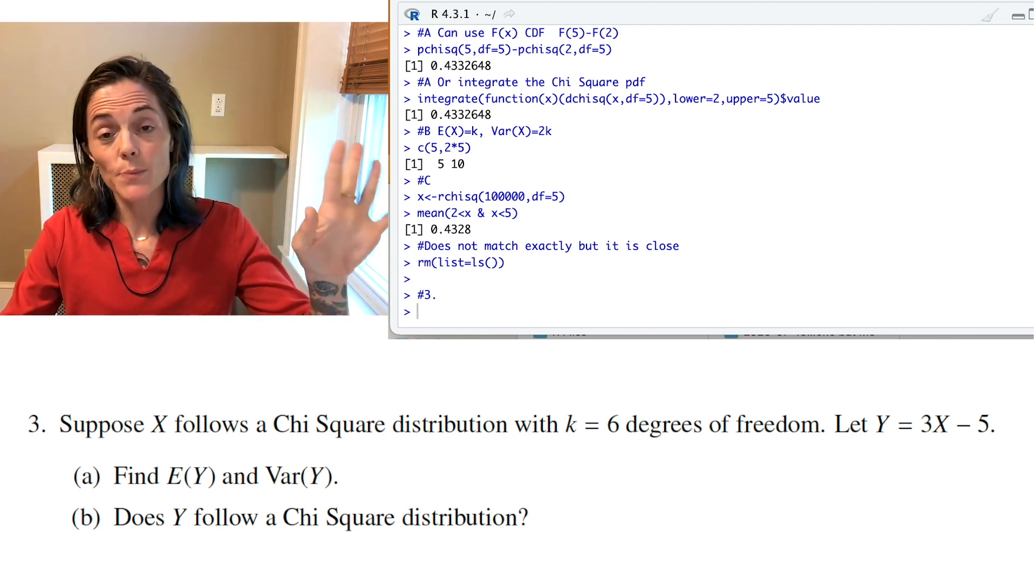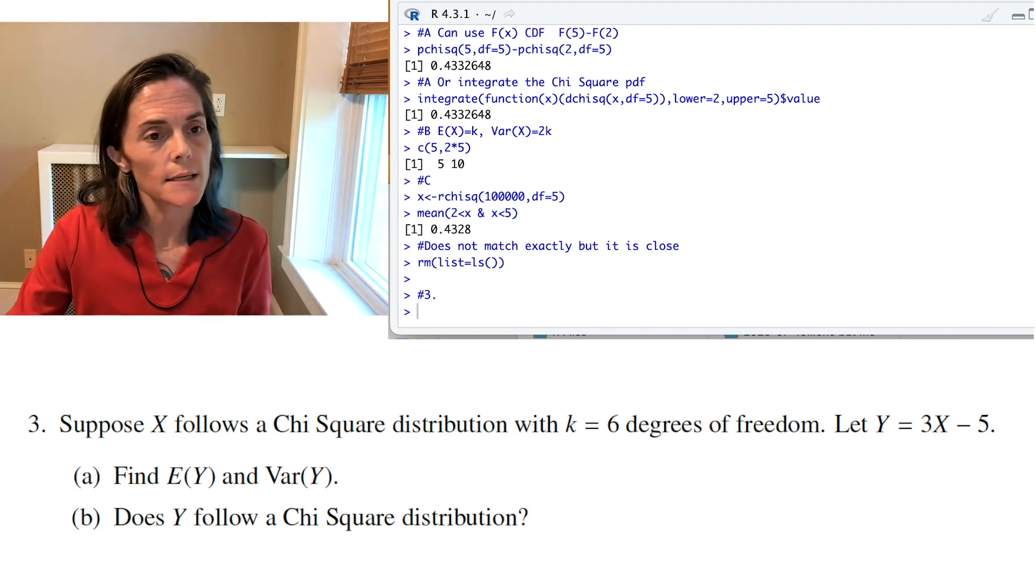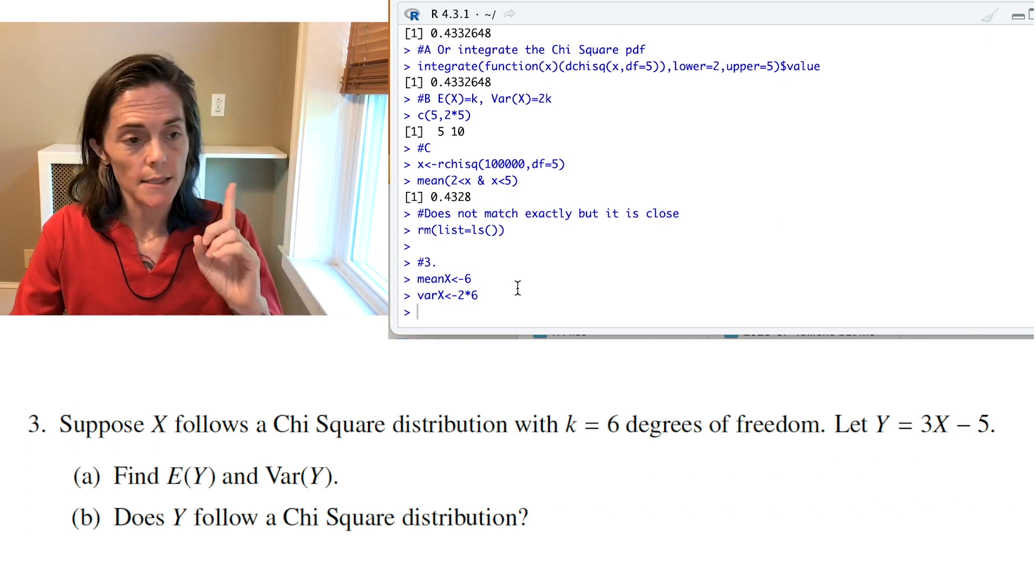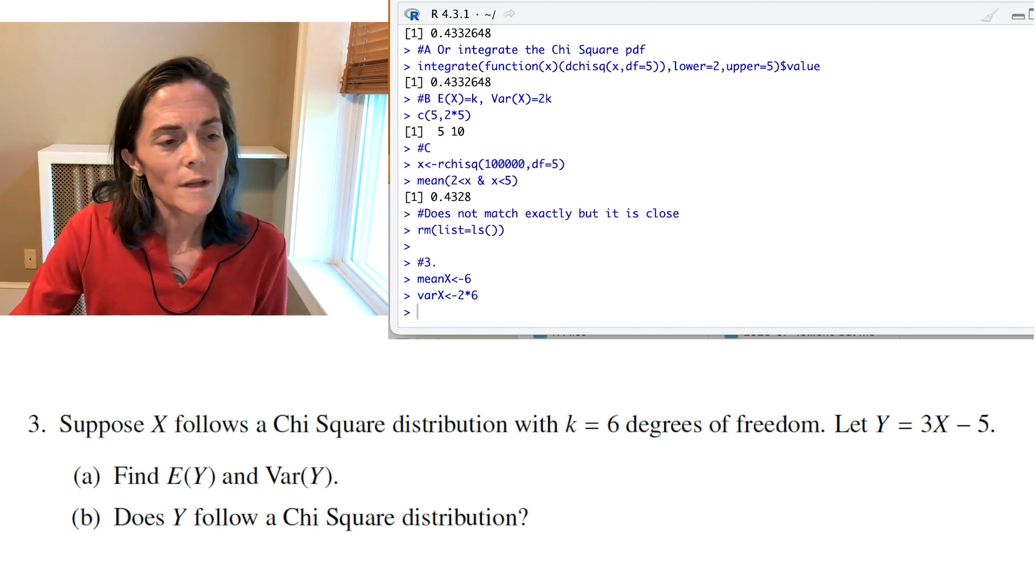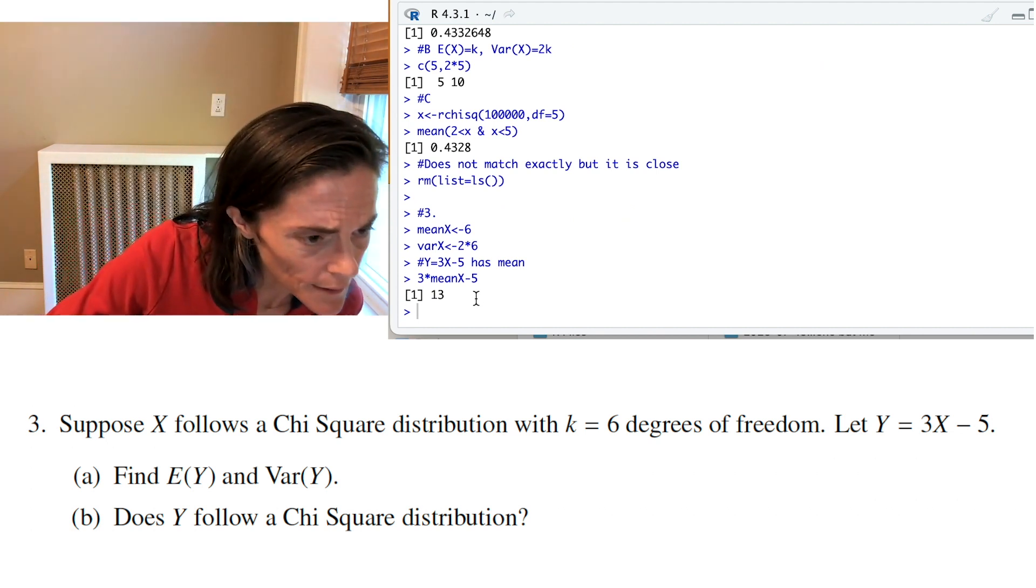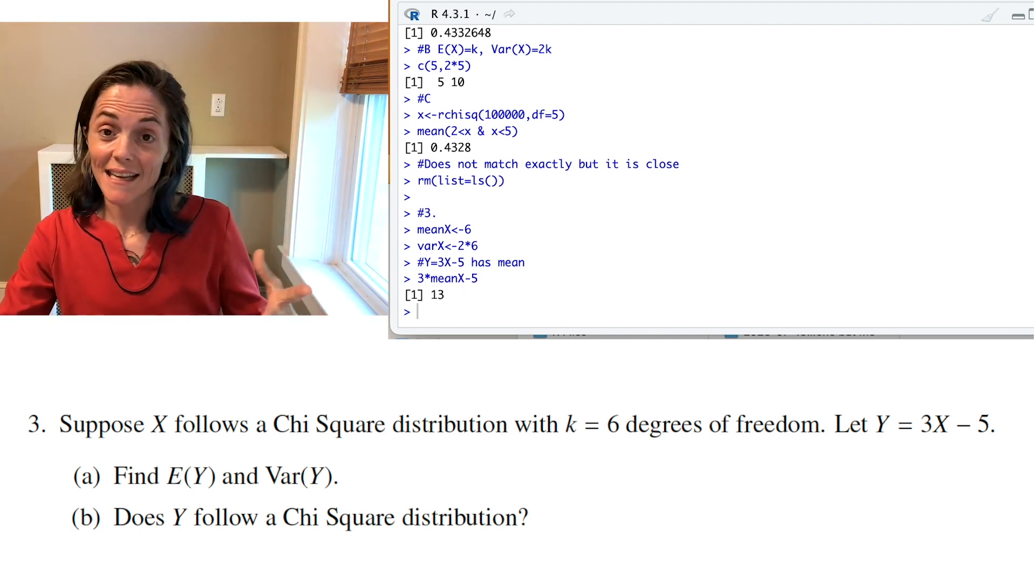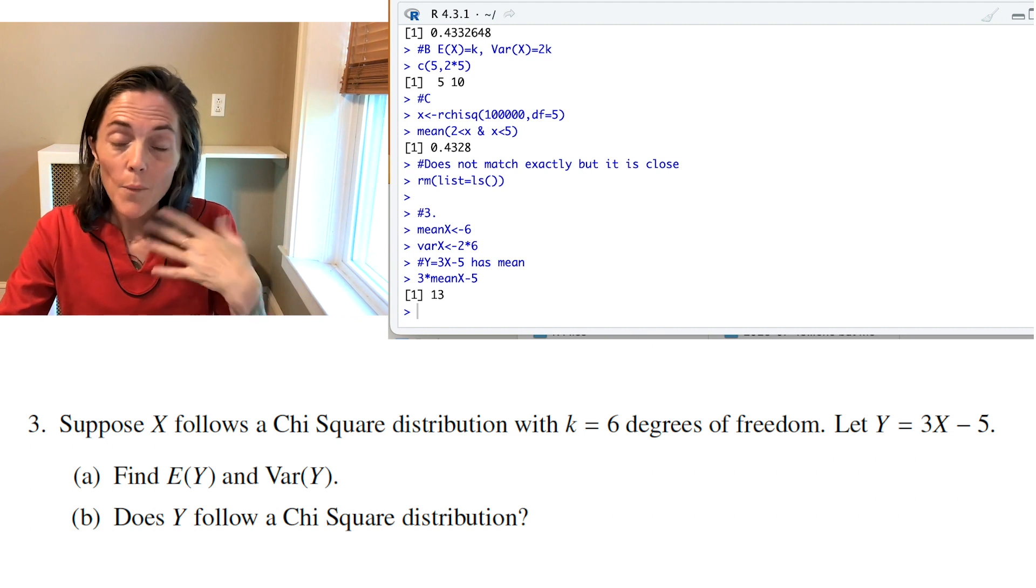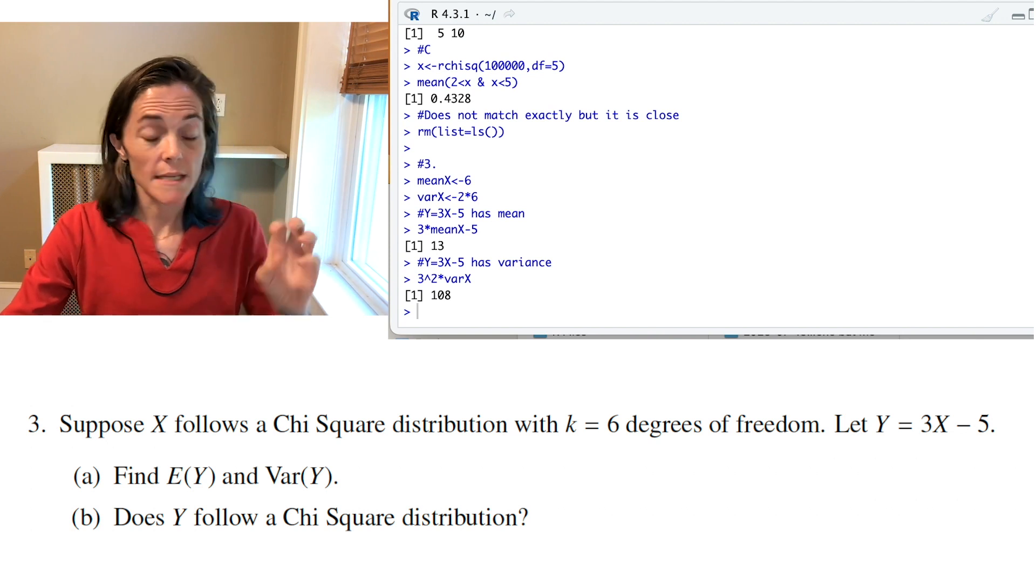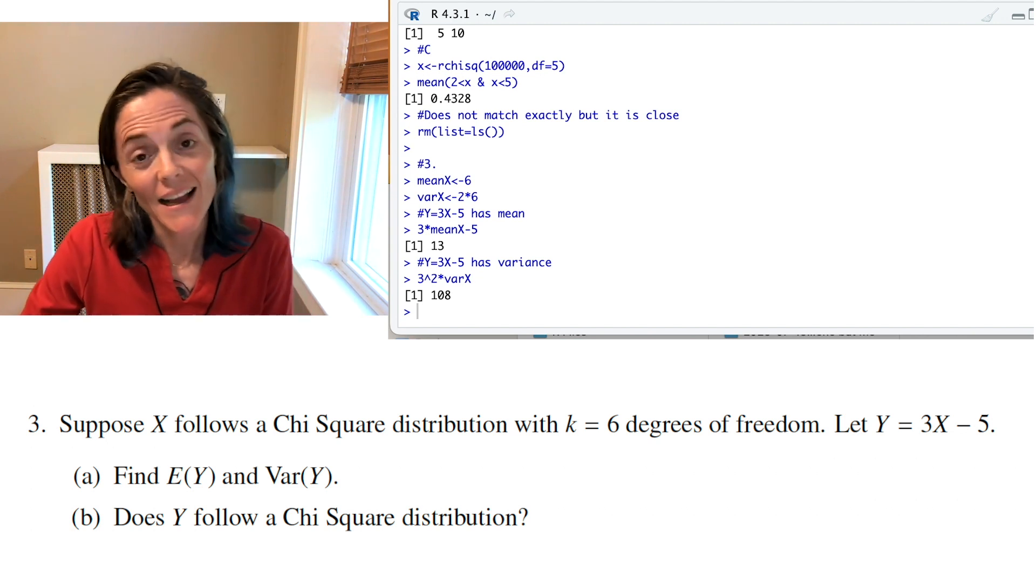Just as I mentioned in the last problem, the mean is the number of degrees of freedom. The variance is 2 times that. So, I will just save that. The mean is 6. Variance is 2 times 6. Now, what do we know about the mean of a linear transformation? Well, I put it here. It would be 3 times the mean of X minus 5, which is 13. It's 18 minus 5. And we could have done this by hand, of course. But the variance, we take 3 squared times the variance of X. And here we get 108.